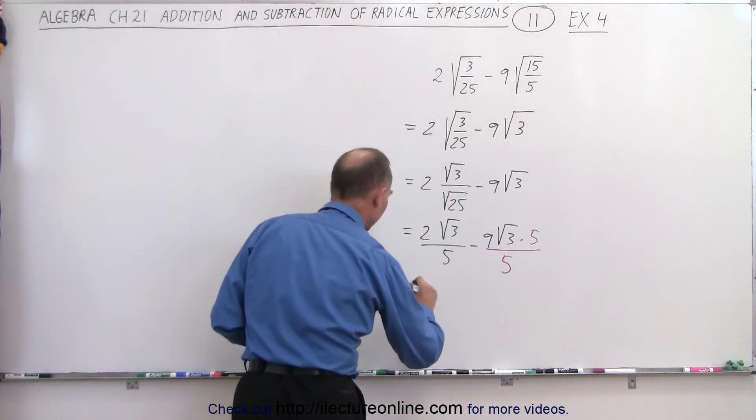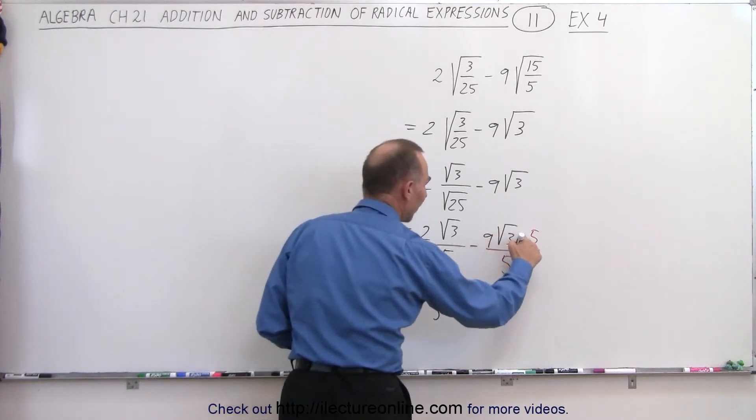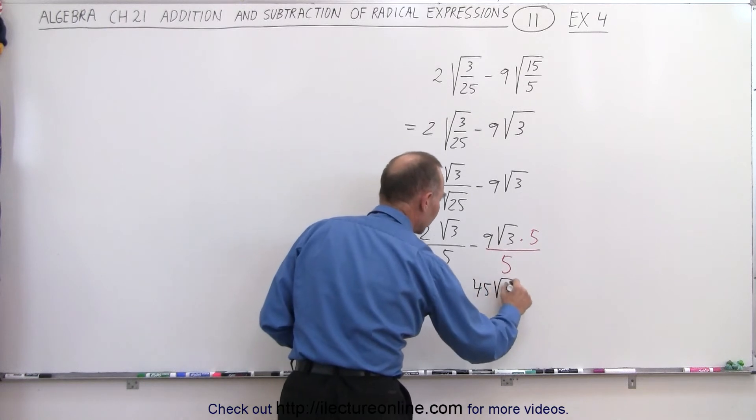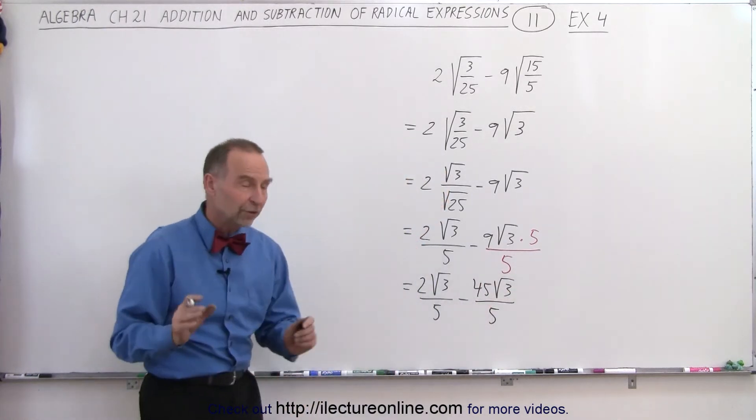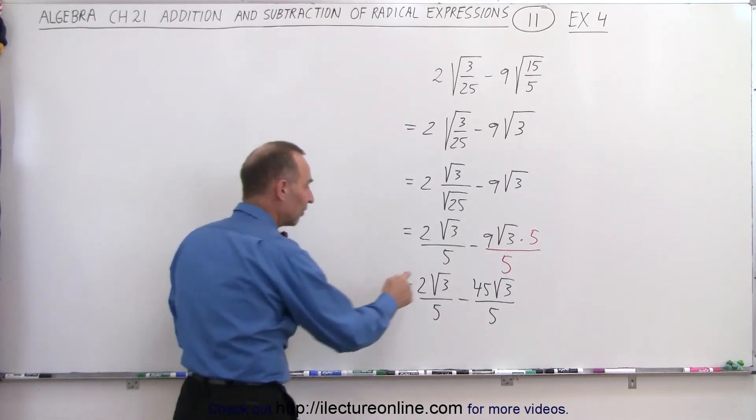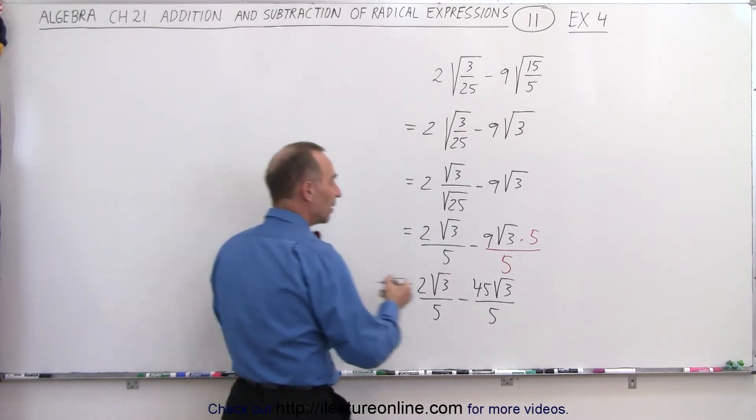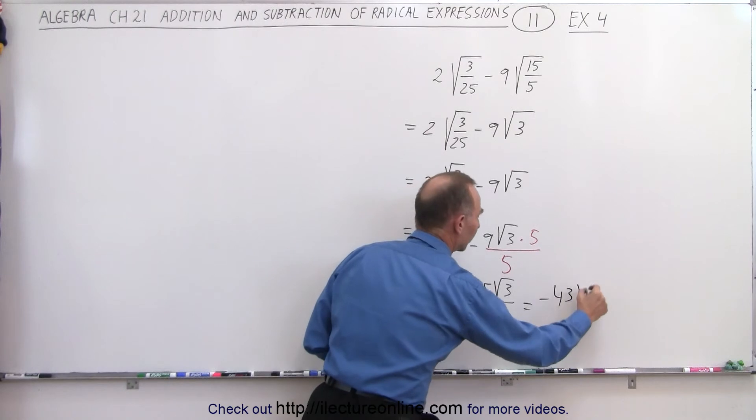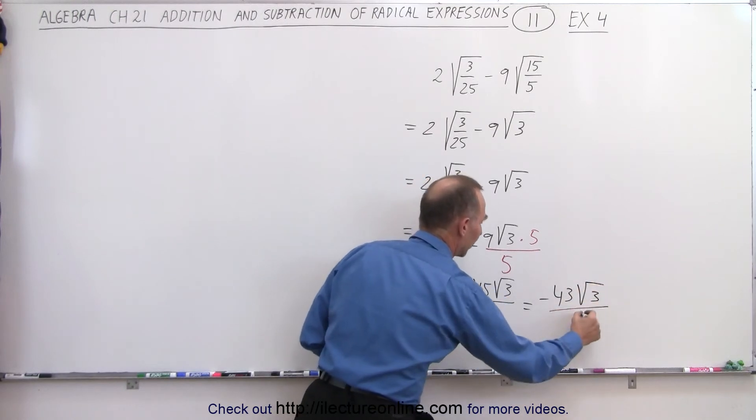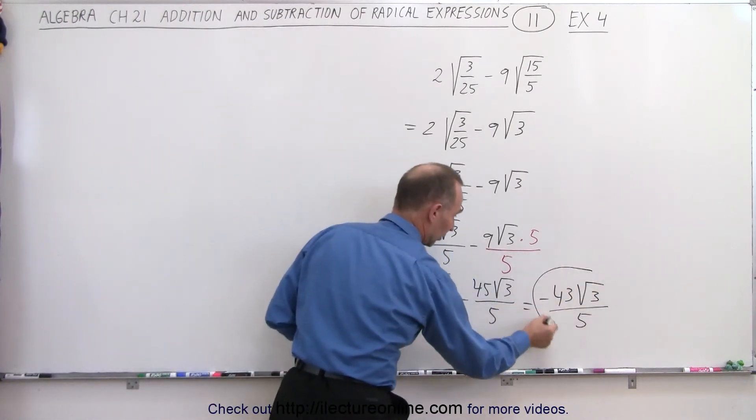So the next thing I would have, this would be equal to 2√3 over 5 minus 9 times 5, which is 45, times √3 over 5. Now you can see they're both over the same denominator, both have the same radical expression. So 2 minus 45 is equal to -43√3, all divided by 5. And that would be the simplified form of my original expression.